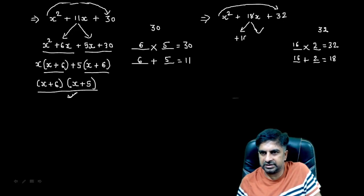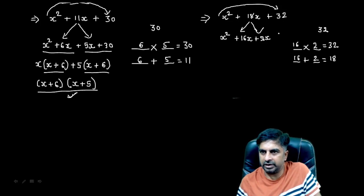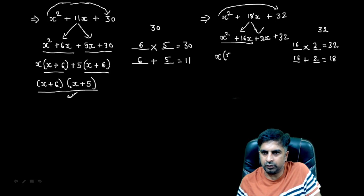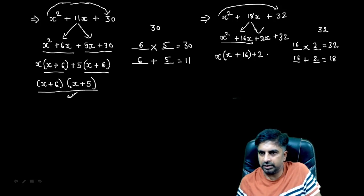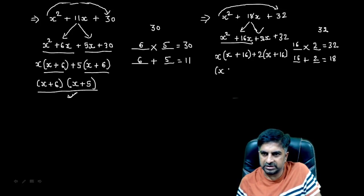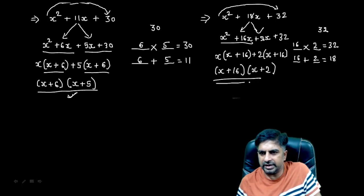So we split the middle term and write it as +16x and +2x. With x² in front and 32 at the end, take out x as common from x² + 16x, leaving x + 16. Then take out 2 as common from 2x + 32 — since 2 × 16 = 32 — leaving x + 16. Take out x + 16 as common, and x + 2 is your other factor. So the factors are (x + 16)(x + 2).